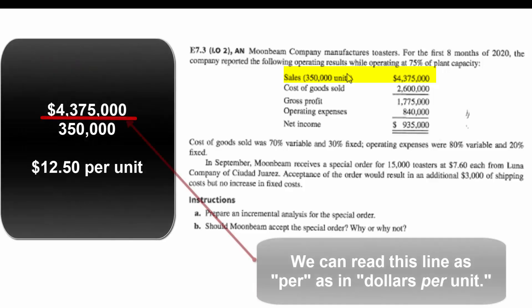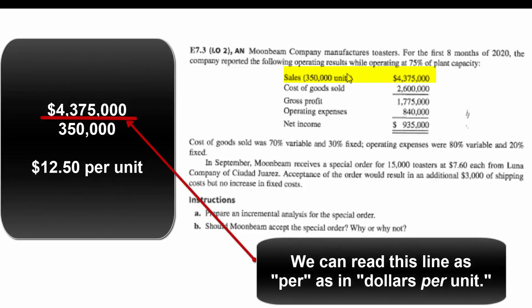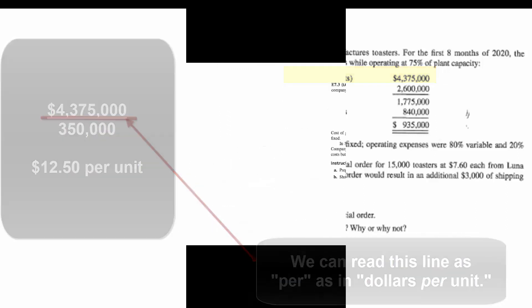The division bar, the fraction bar, or the vinculum if we want to get technical, can be read as 'per.' So dollars per unit: $4,375,000 divided by 350,000 units means we usually sell our toasters for $12.50 each.